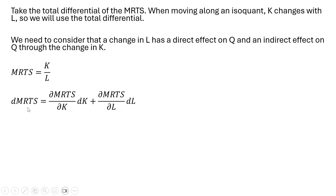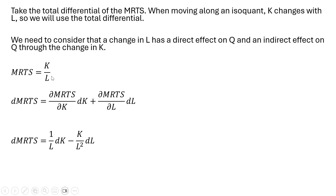The left-hand side can be thought of as the change in the marginal rate of technical substitution. On the right-hand side, we take the partial derivative of the MRTS with respect to capital, multiply that by the change in capital, plus the partial derivative of the MRTS with respect to labor, multiplied by the change in labor. The partial derivative of the MRTS with respect to capital is just one divided by L, multiplied by a small change in capital. Then we take the partial derivative of the MRTS with respect to labor — so K divided by L, using the quotient rule, gives us minus K divided by L squared — multiplied by a small change in labor.